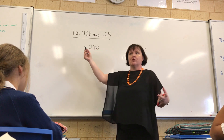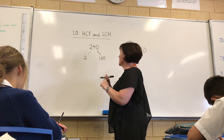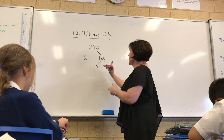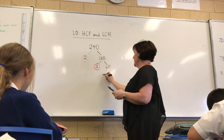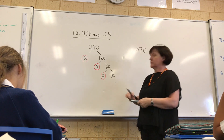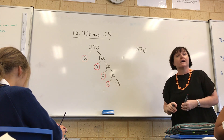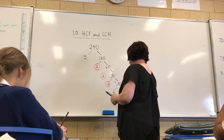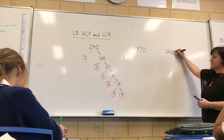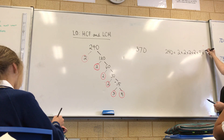Who'd like to have a go at doing the factor tree? So 2 and 120. We'll circle the 2 because it's prime. Then 2 and 60. Circle the 2. Then 2 and 30. And it's always a good idea to keep doing 2, 2, 2 as long as you can. Then 2 and 15. And then 3 and 5. So the product of the prime factors of 240 is 2 times 2 times 2 times 2 times 3 times 5.